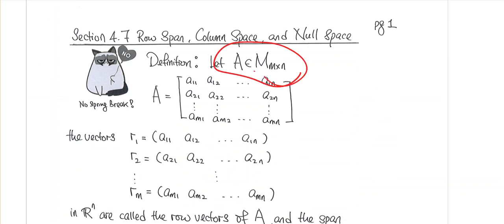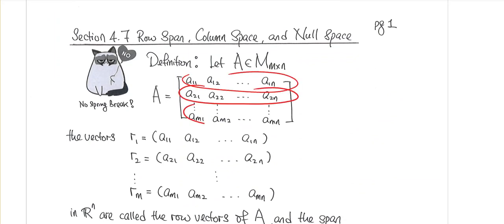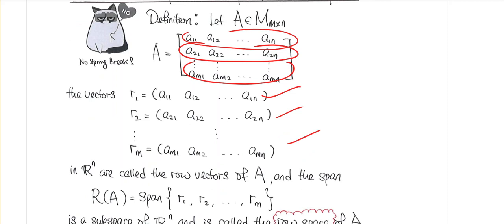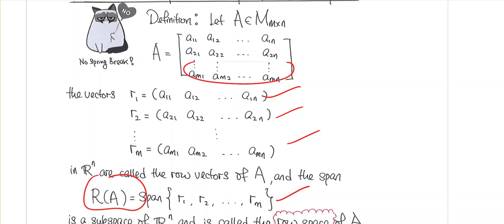Remember, all these vector spaces are always associated with a matrix. Given the matrix A, these are known as the row vectors, and the collection — the set of all linear combinations of these row vectors, which means the span of all these row vectors — forms a vector space. The span of any vectors is going to be a vector space, and this vector space is known as the row space of A.